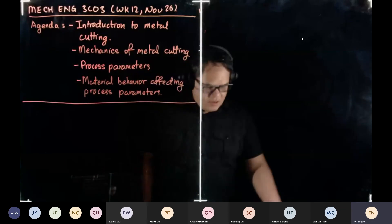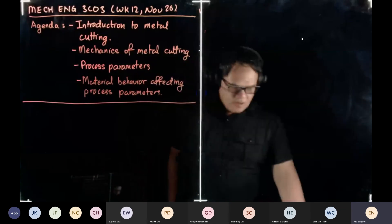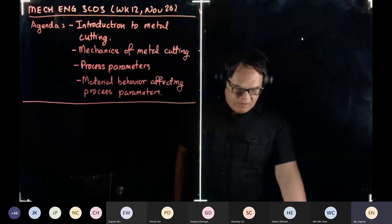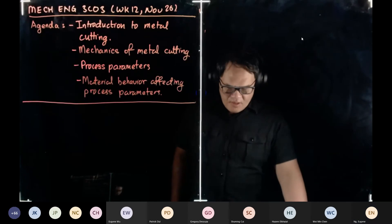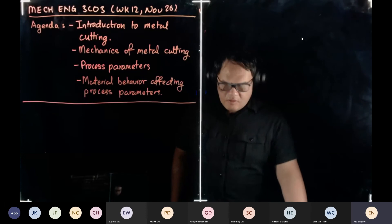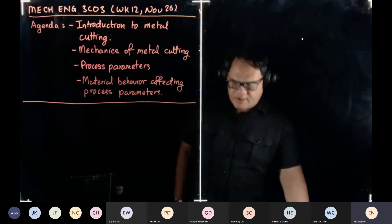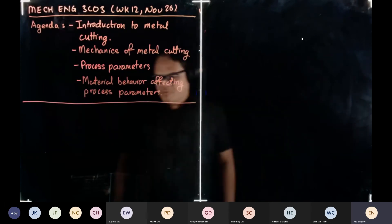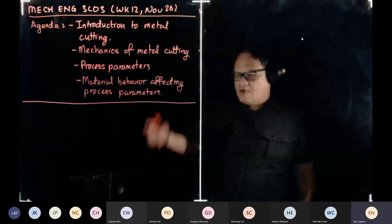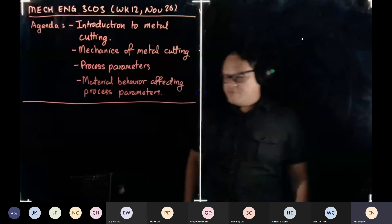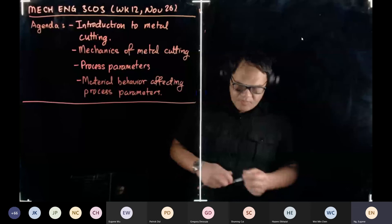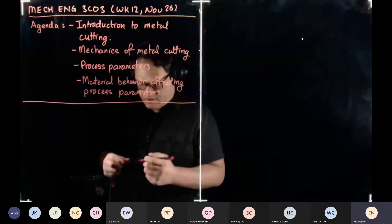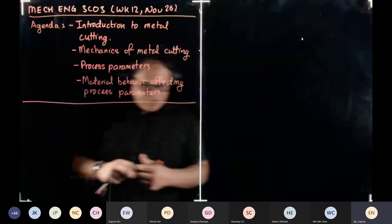For today we're going to talk about a different topic. We're going to look into the introduction to metal cutting, then after that we'll go into the mechanics of metal cutting and process parameters, and how material behavior affects process parameters. So let's go into the introduction.